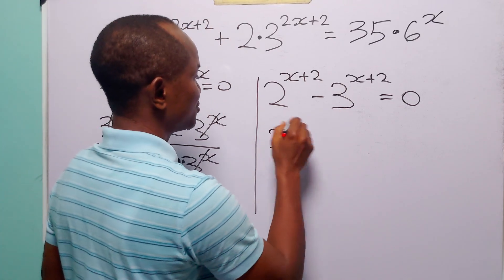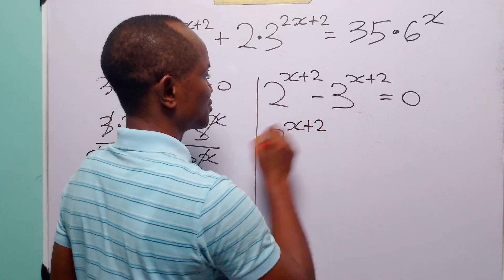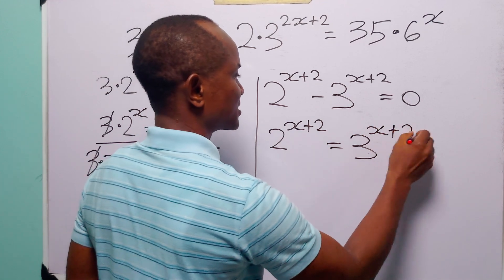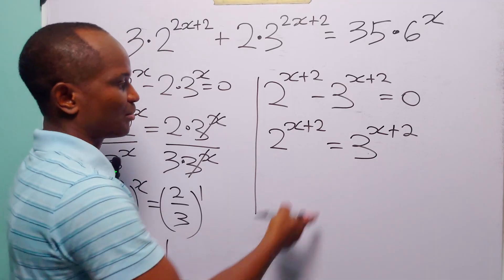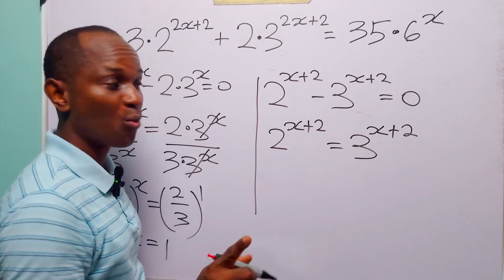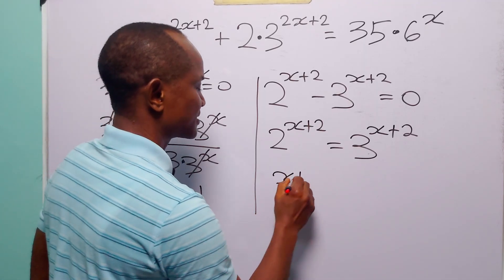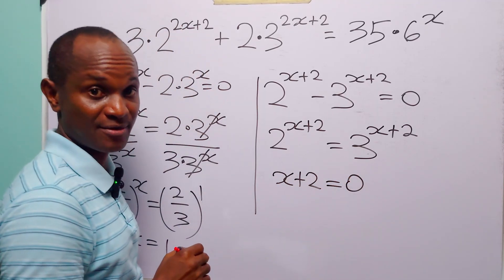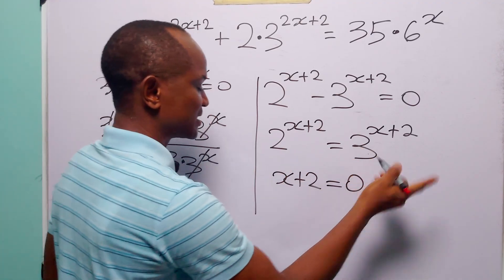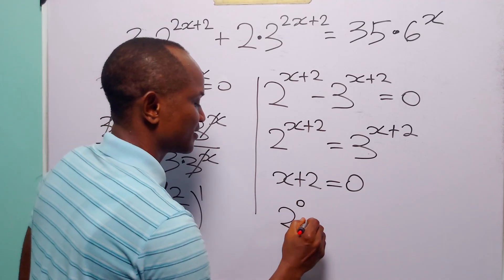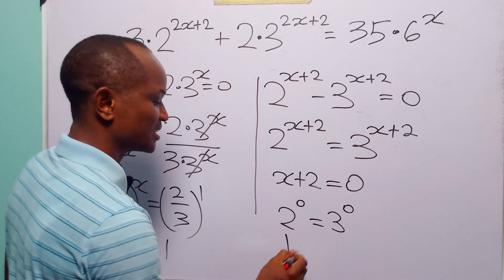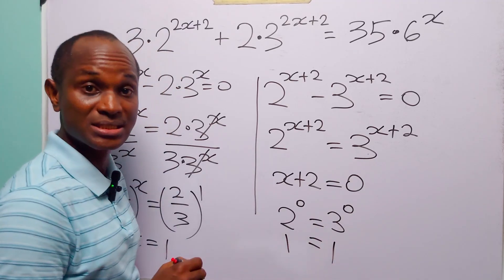From the second factor: 2 to the power x+2 equals 3 to the power x+2. This equation can only be true when x+2 equals 0, because the only time these are equal is when both equal 2 to the power 0 and 3 to the power 0, since 2⁰ equals 1 and 3⁰ equals 1.